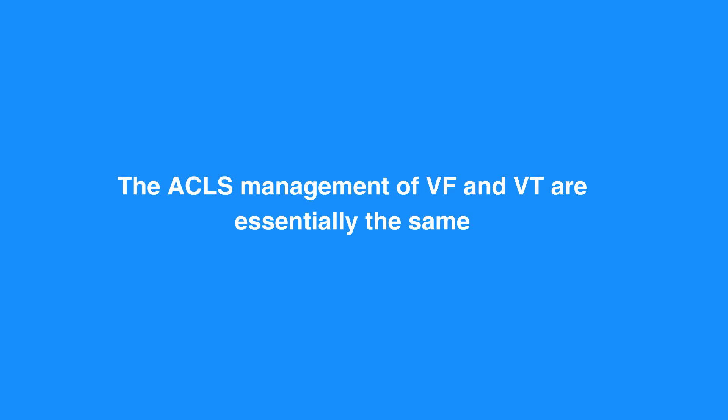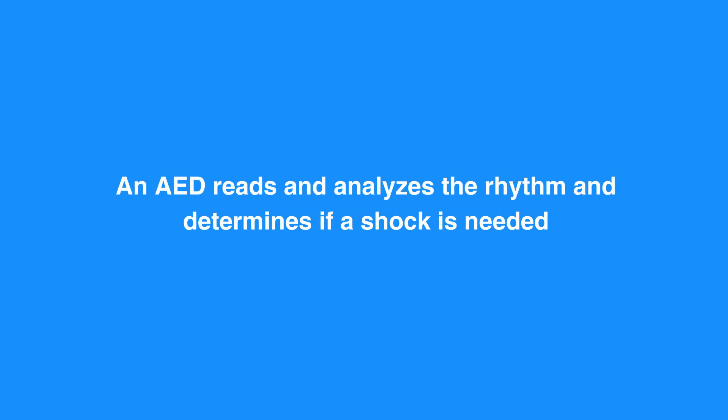The resuscitation treatment for VF and pulseless VT starts with a BLS survey. An AED reads and analyzes the rhythm and determines if a shock is needed. The AED is programmed to only prompt the user to shock VF and VT rhythms, but the machine does not know if the individual has a pulse or not. This is the primary reason you should not use an AED on someone with a palpable pulse.